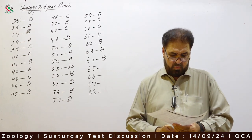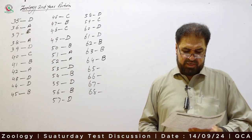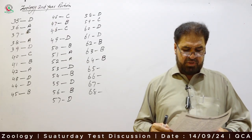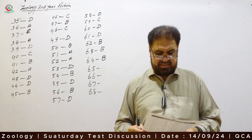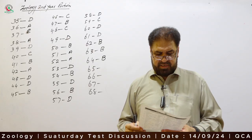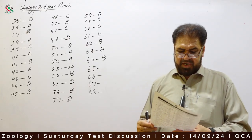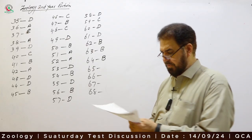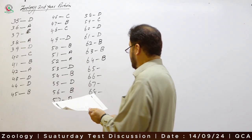Question 65: Which blood group is known as the universal recipient? AB positive. Option A is correct.